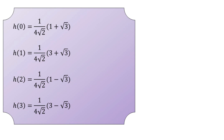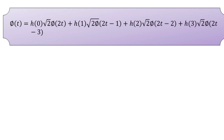The scaling function Φ(T) is obtained as: H(0)·√2·Φ(2T) + H(1)·√2·Φ(2T−1) + H(2)·√2·Φ(2T−2) + H(3)·√2·Φ(2T−3). This is the refinement relation expressing Φ(T) in terms of Φ(2T) and its translates.